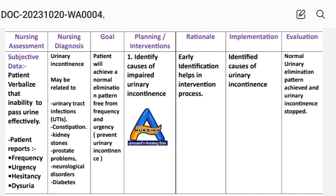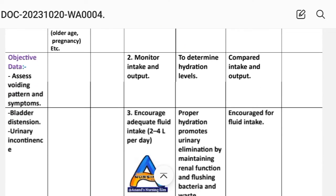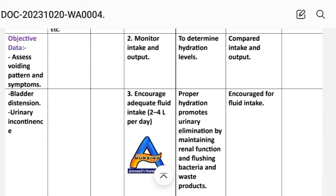Intervention 1: Identify the cause of impaired urinary incontinence. Rationale: Early identification helps the intervention process. Implementation: Identified causes of urinary incontinence.